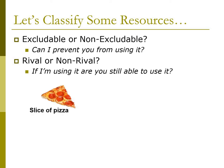Let's start with a slice of pizza. This is an excludable and rival resource. If I own the pizza, I can stop you from eating it, and if I eat it, you're not getting any.